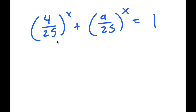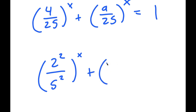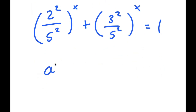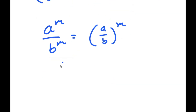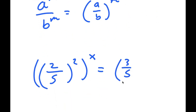From here I can rewrite 4 over 25 as 2 squared over 5 squared, and I can rewrite 9 over 25 as 3 squared over 5 squared. Now applying the rule a^m over b^m equals (a/b)^m, so 2 squared over 5 squared turns into 2 over 5 squared, and the same thing with 3 squared over 5 squared gives 3 over 5 squared.